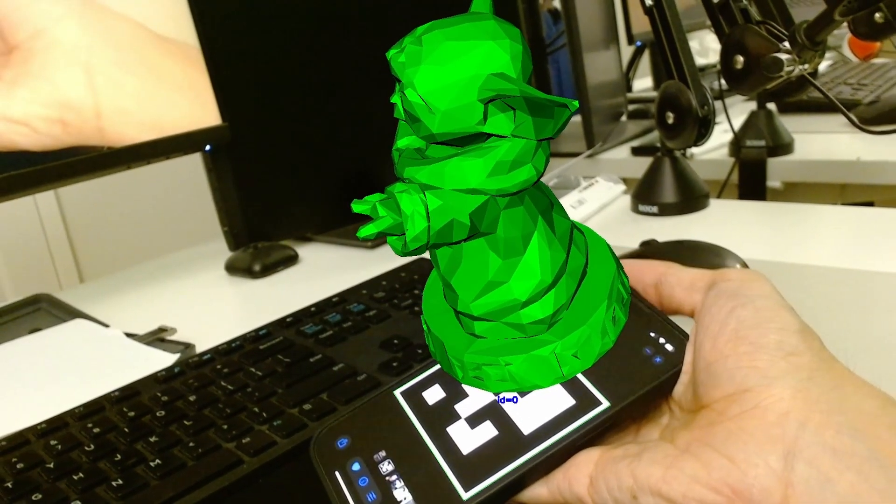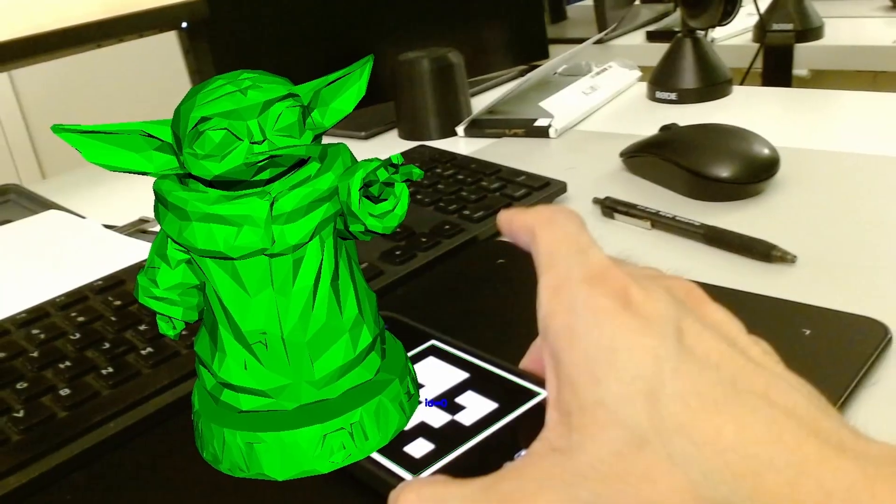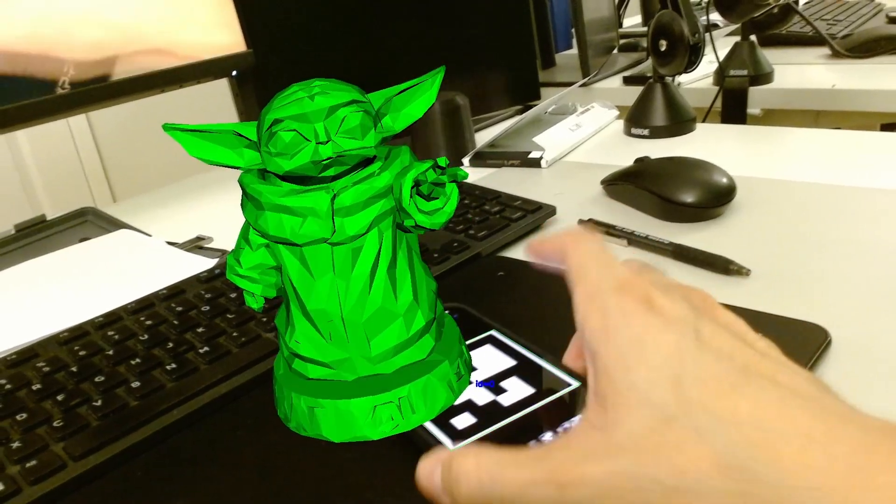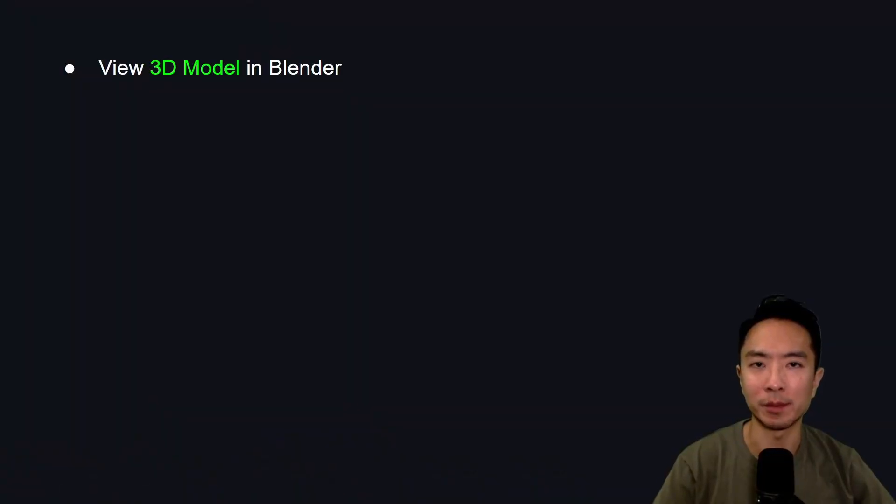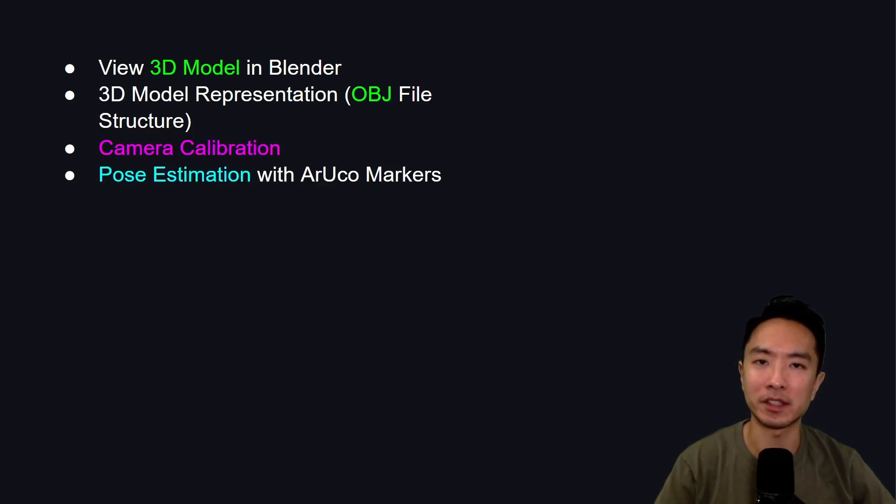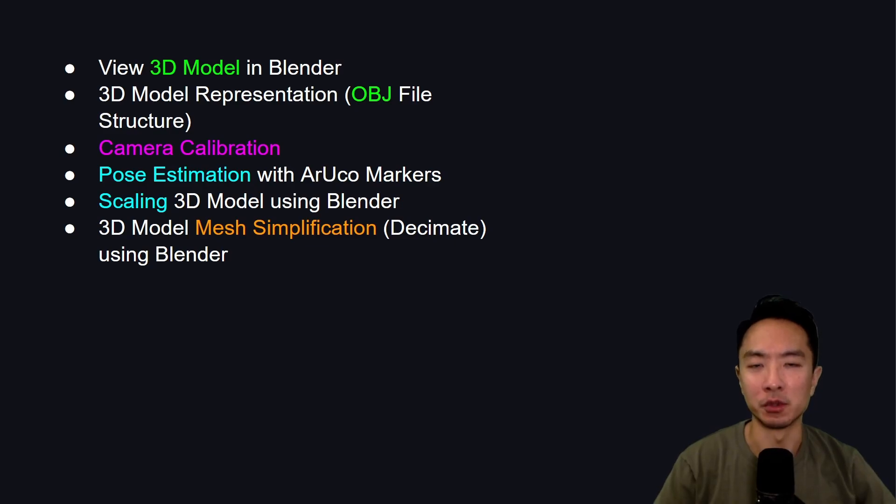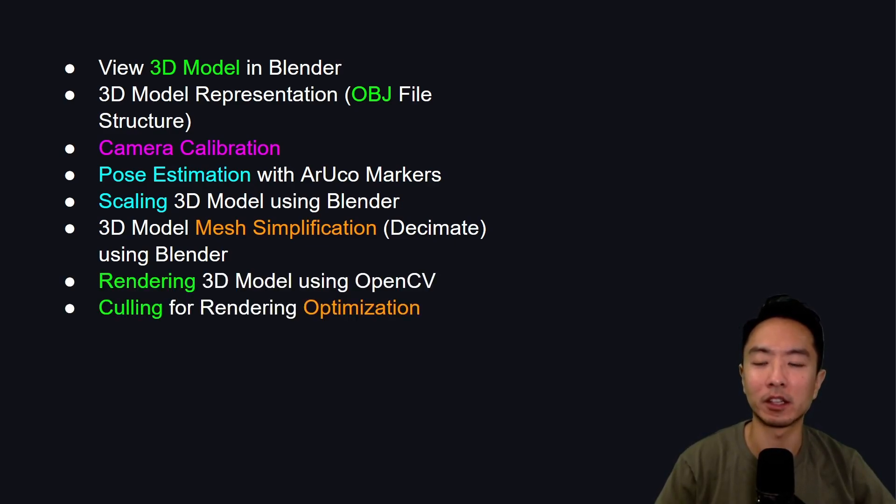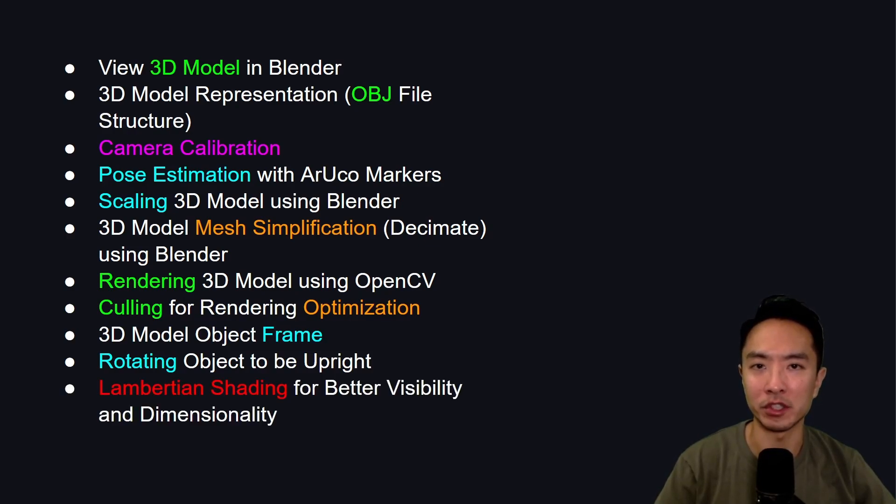I will show you how to create your own augmented reality app by overlaying a 3D model onto your scene. I will walk you through step by step from viewing your 3D model, 3D model representation, camera calibration, pose estimation with ArUco markers, scaling your 3D model, using mesh simplification, rendering, culling, 3D model object frame, rotating your object, and finally Lambertian shading.